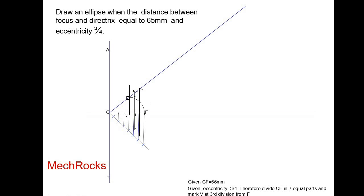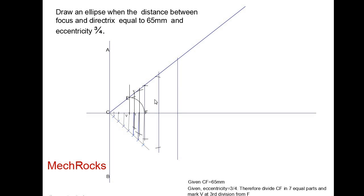Name the next line as 2, 2 dash. Take 2 to 2 dash as the radius, F as center, draw an arc above and below. Similarly, take 3, 3 dash as the radius, F as center, draw an arc above and below. Then take 4, 4 dash as the radius, F as center, draw an arc above and below. Then take 5, 5 dash as the radius, F as center, draw an arc above and below.